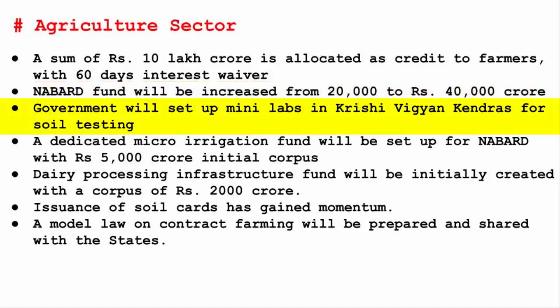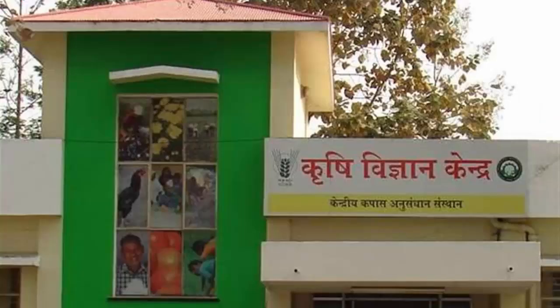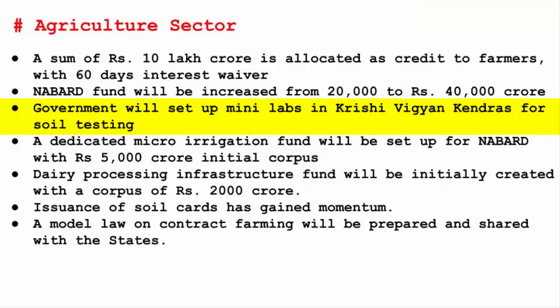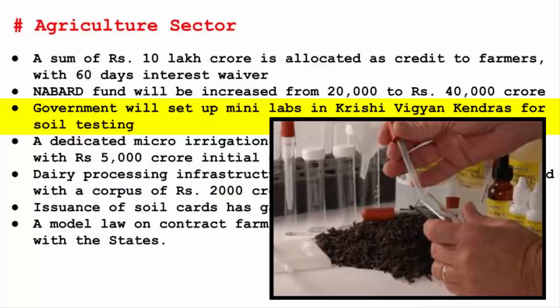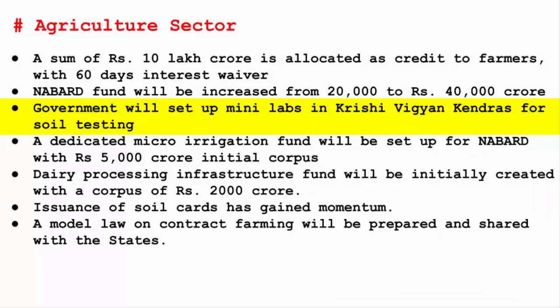The government will set up mini labs in Krishi Vigyan Kendras for soil testing. Krishi Vigyan Kendra (KVK) is like an R&D centre financed by the Indian Council of Agricultural Research, catering to the needs of the farming community. Soil testing determines density, moisture content, and drying effects of the soil. This scientific approach is required to increase the efficiency of irrigation.